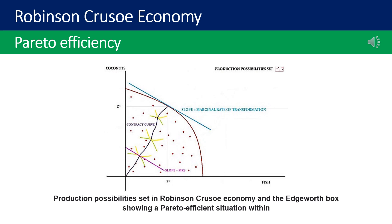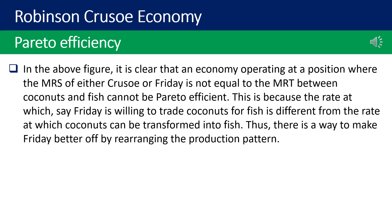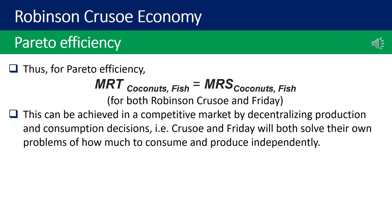An economy operating at a position where the MRS of either Crusoe or Friday is not equal to the MRT between coconuts and fish cannot be Pareto efficient. This is because the rate at which Friday is willing to trade coconuts for fish is different from the rate at which coconuts can be transformed into fish, so there is a way to make Friday better off by rearranging the production pattern. Thus, for Pareto efficiency: MRT(coconuts, fish) = MRS(coconuts, fish) for both Robinson Crusoe and Friday. This can be achieved in a competitive market by decentralizing production and consumption decisions independently.